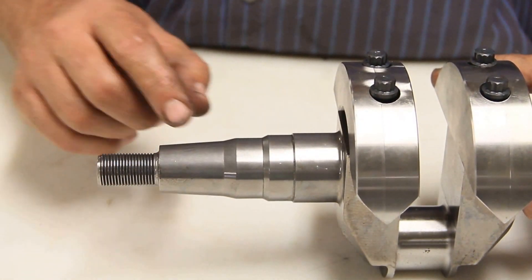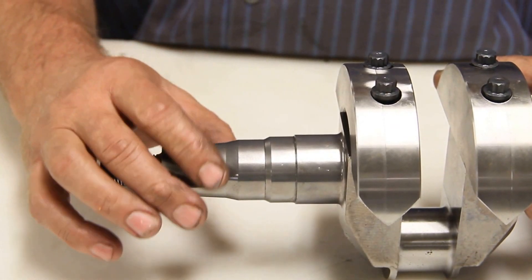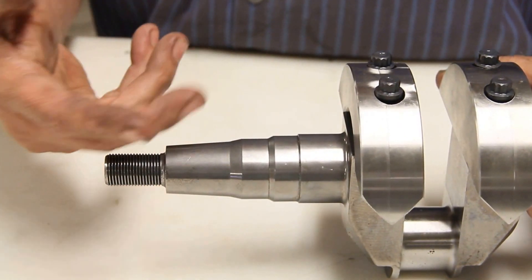I kid you not, you can run the thing all year, pull that flywheel off, it's just like the day you put it on, because that Loctite will protect that area.